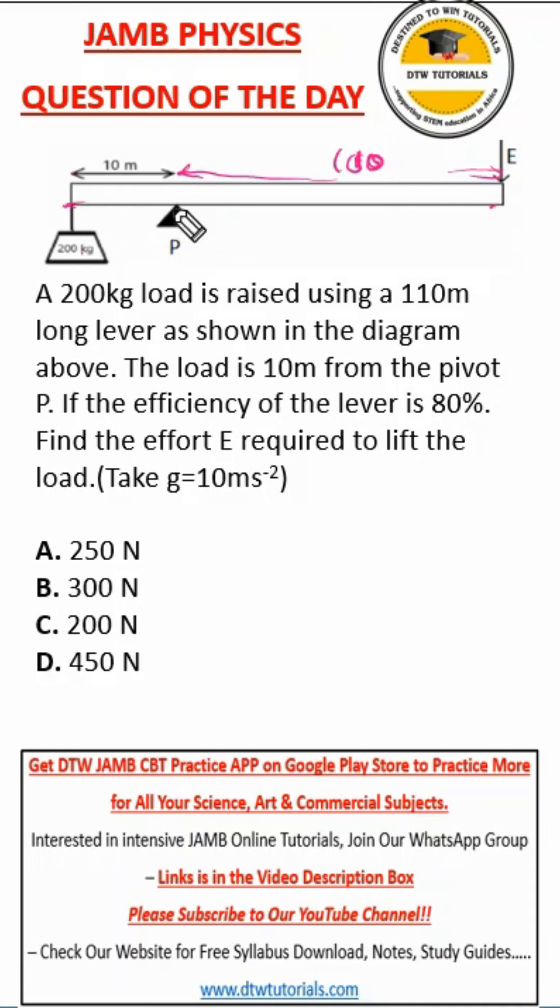The load is 10 meters from the pivot P. This is the distance moved by the load from the pivot. Now if the efficiency of the lever is 80 percent, find the effort E required to lift the load.